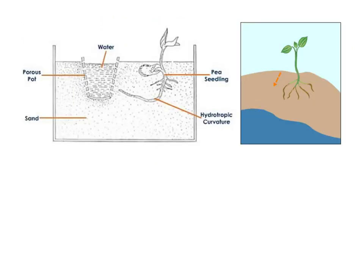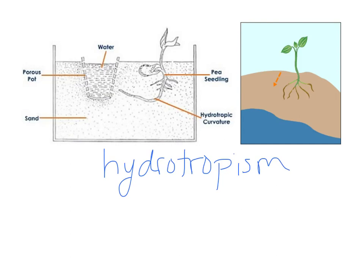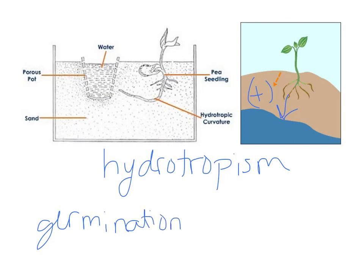A third tropism is hydrotropism. 'Hydro' means water, so the plant is growing in response to water. This is usually a positive response — the roots go towards the water source so they can get more nutrients for growth. Another plant response to water — though not a tropism — is germination. Germination is when the seed starts to sprout, when the roots and shoots start to emerge from the seed. Germination will occur when there is enough water available.